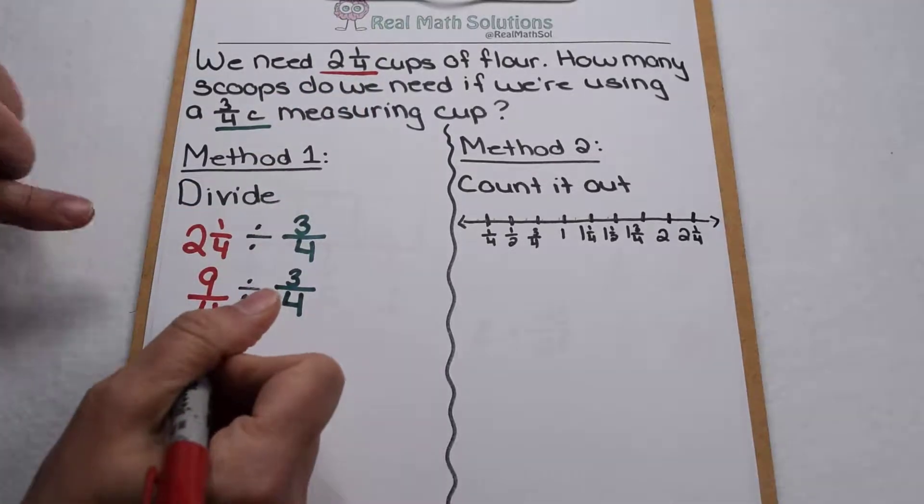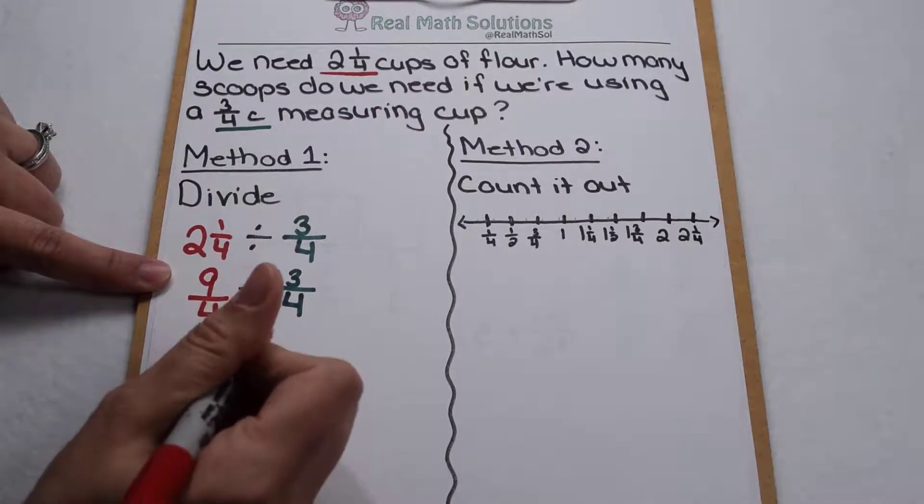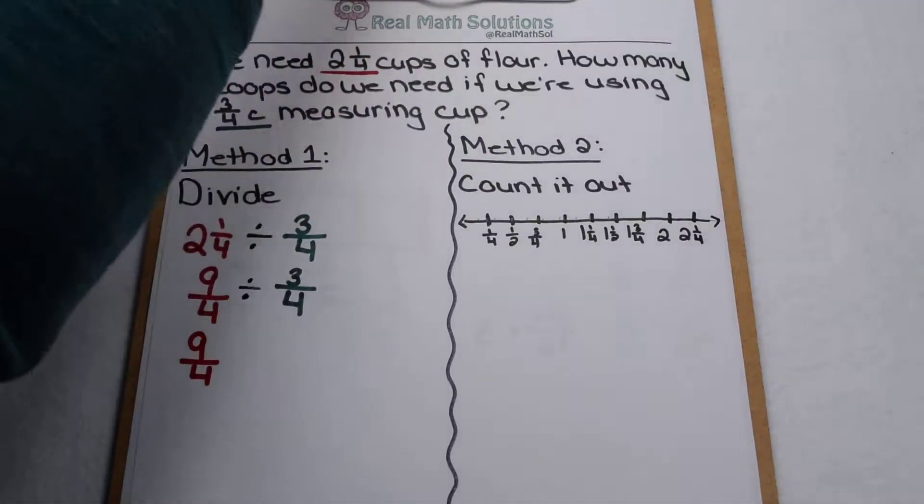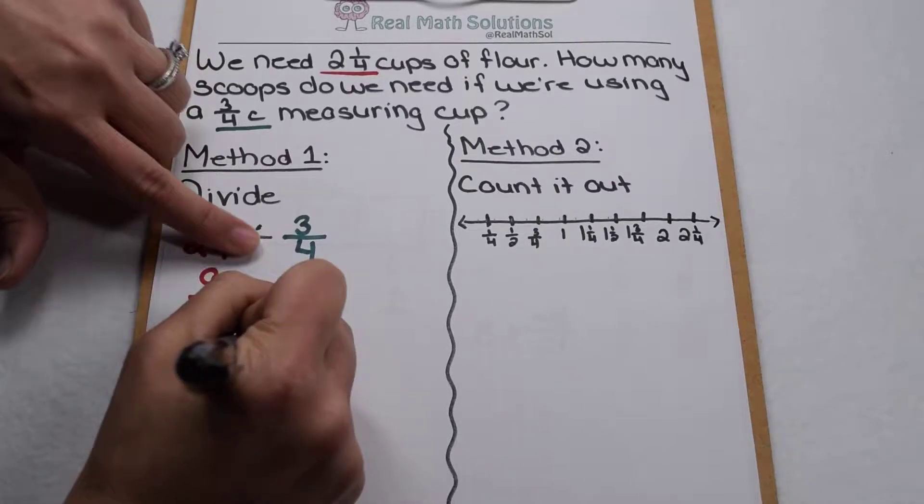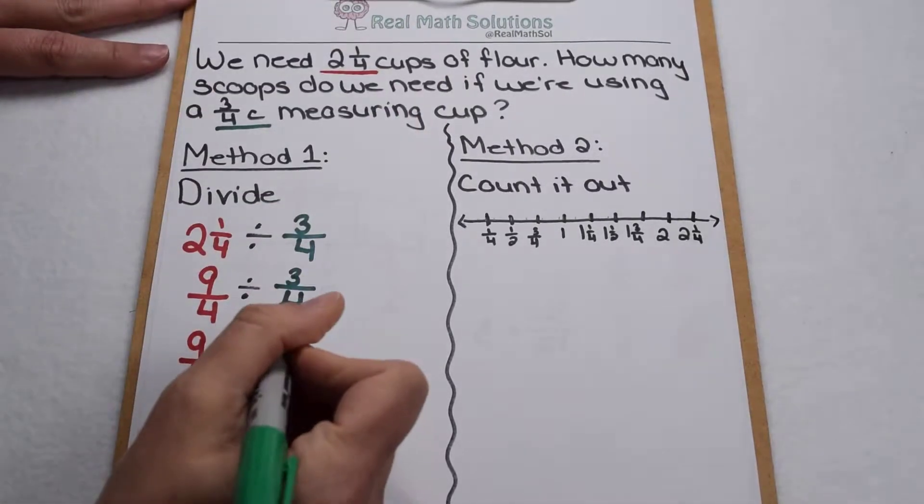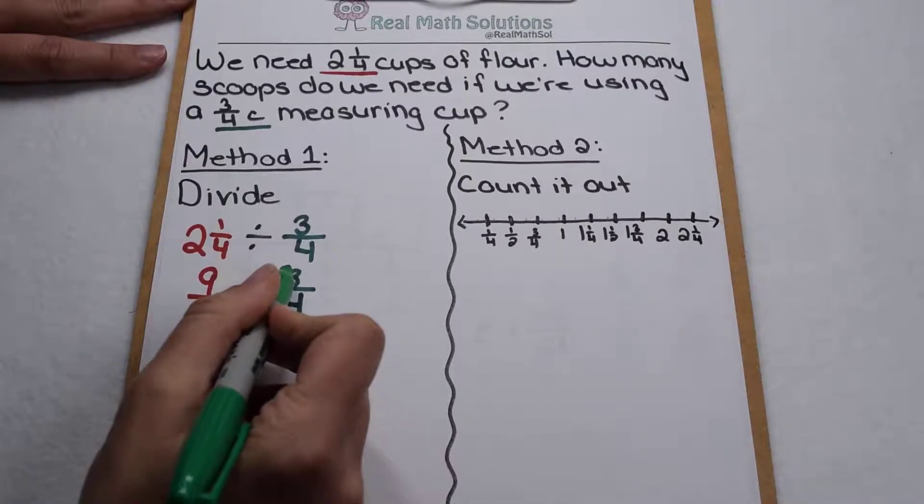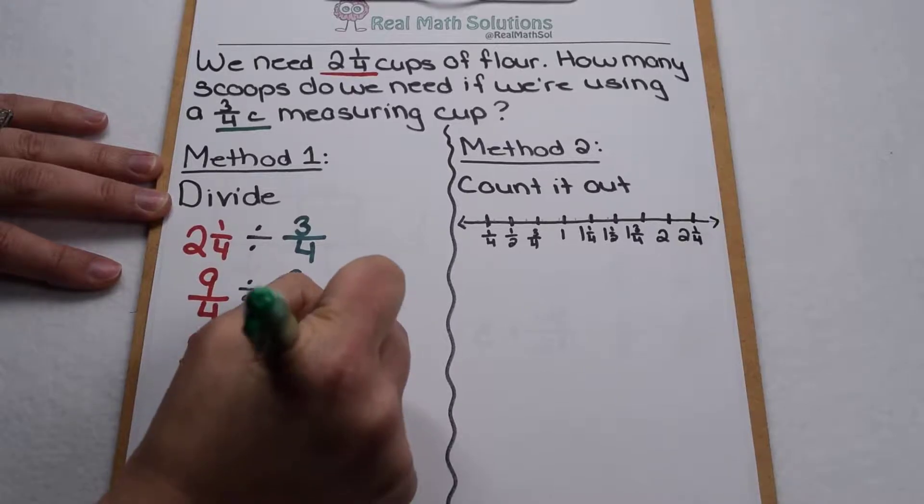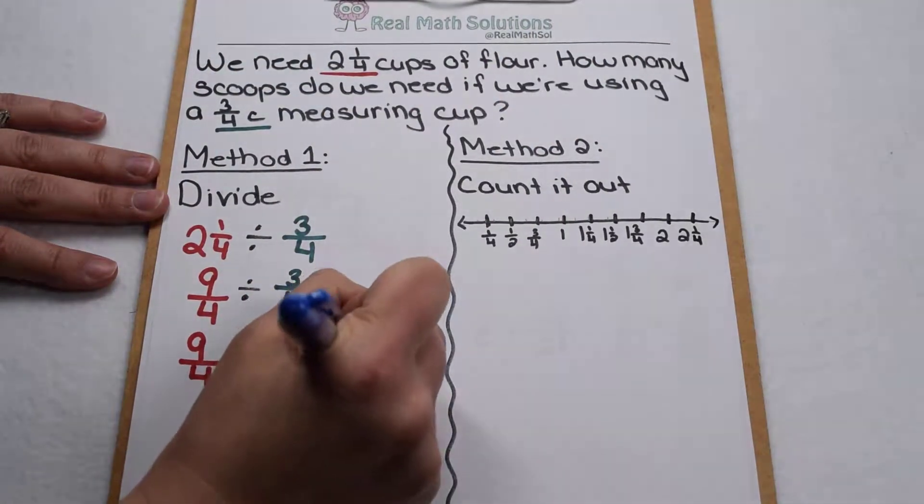We also know that when we divide with fractions, it's really multiplying by the reciprocal. So my dividend is going to stay the same, so nine fourths stays the way it is. My division sign changes to a multiplication sign, and then I need to take the reciprocal of my divisor. So instead of multiplying by three fourths, I'm going to flip that over and multiply by four thirds. Now we can solve.